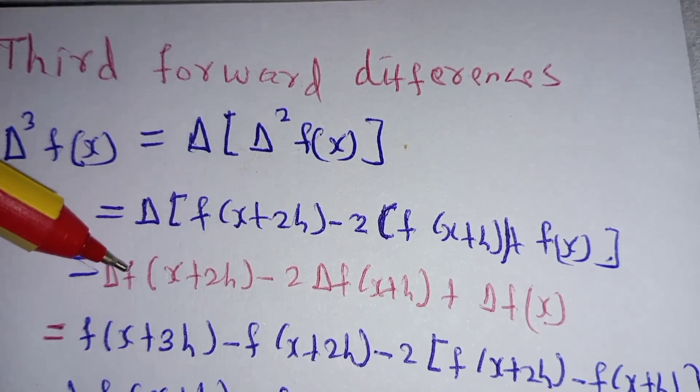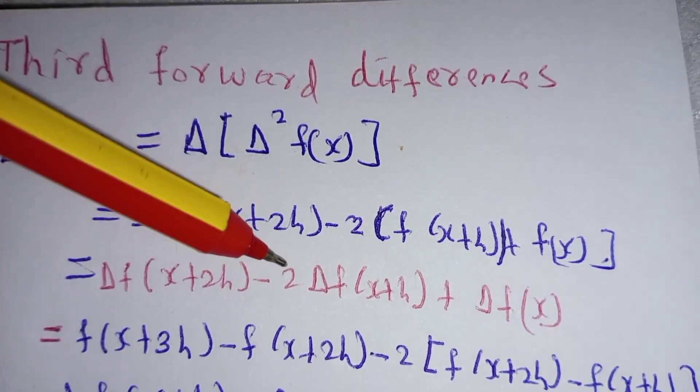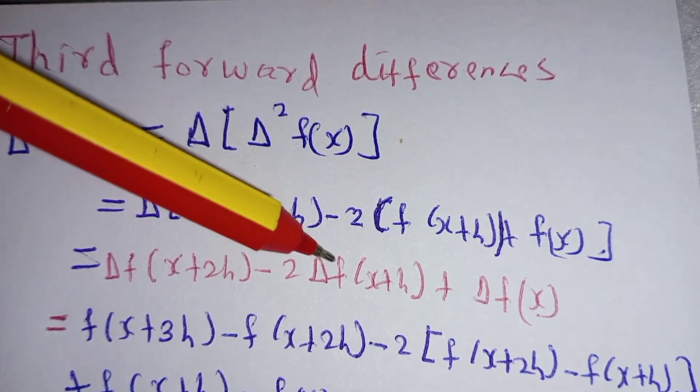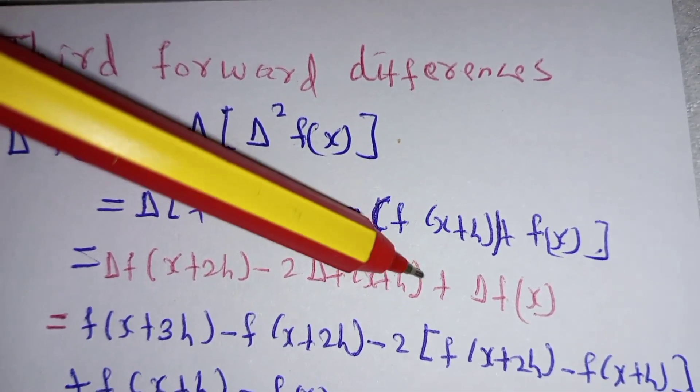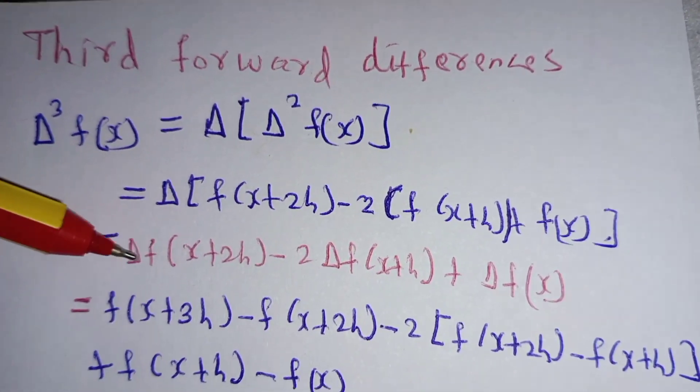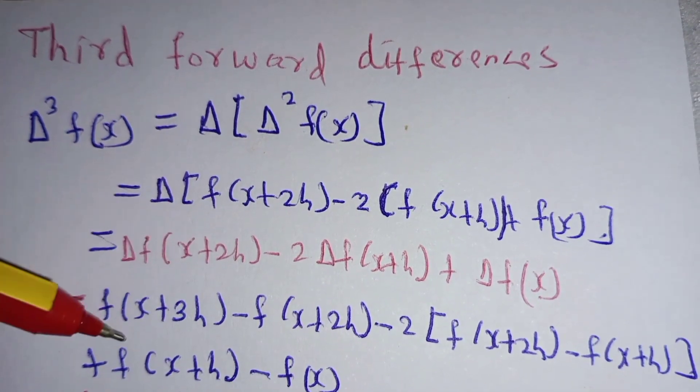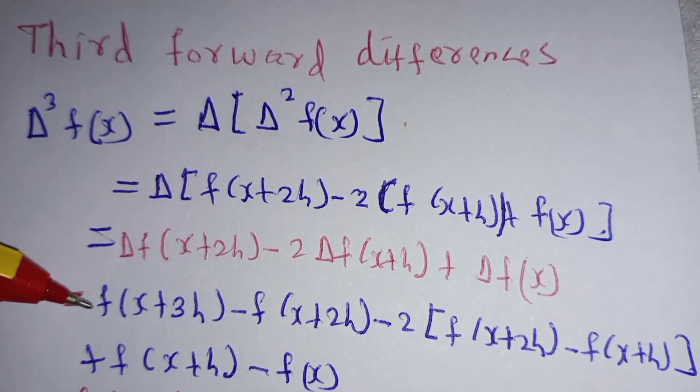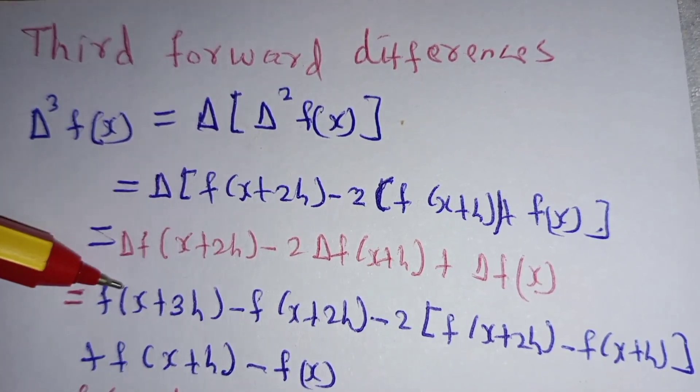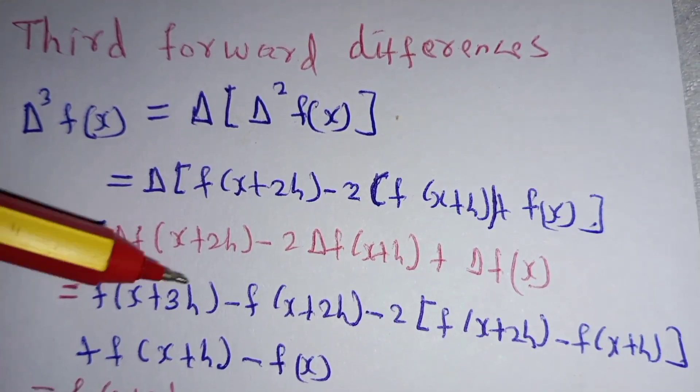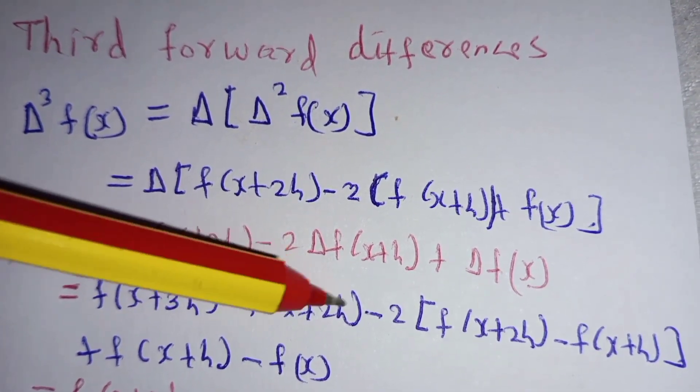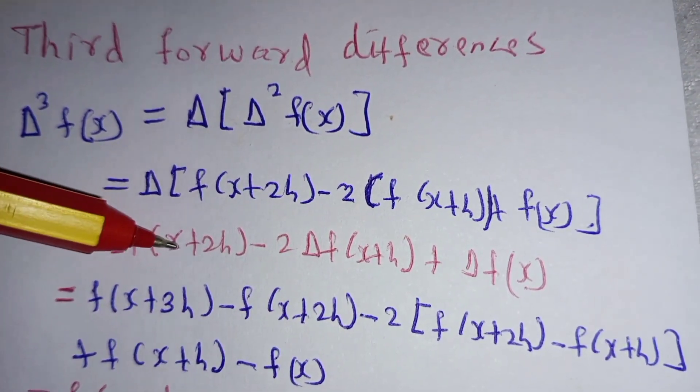So, for this operator, Δf(x+2h) - 2Δf(x+h) + Δf(x). When you operate on f(x+2h), it will be f(x+3h) - f(x+2h). This is for this part.